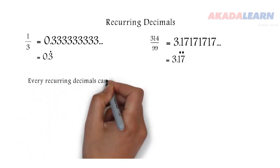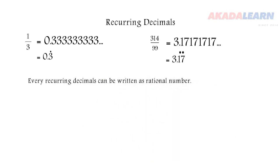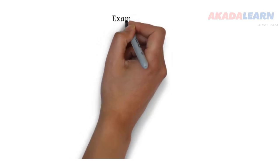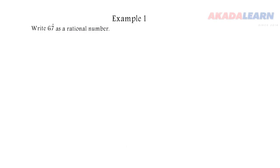So every recurring decimal can be written as a fraction. So the example we are going to see will help us to understand that. So we are asked to write 6.7 with a dot on top of the 7 as a rational number. So we should write it in form of a fraction.